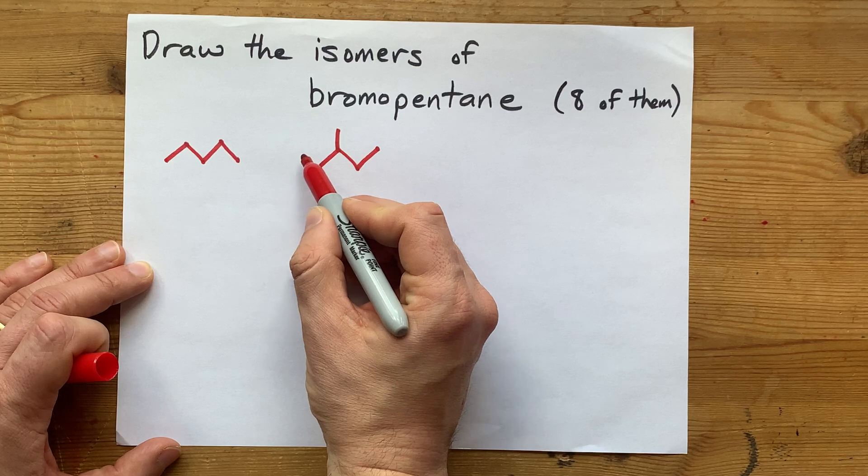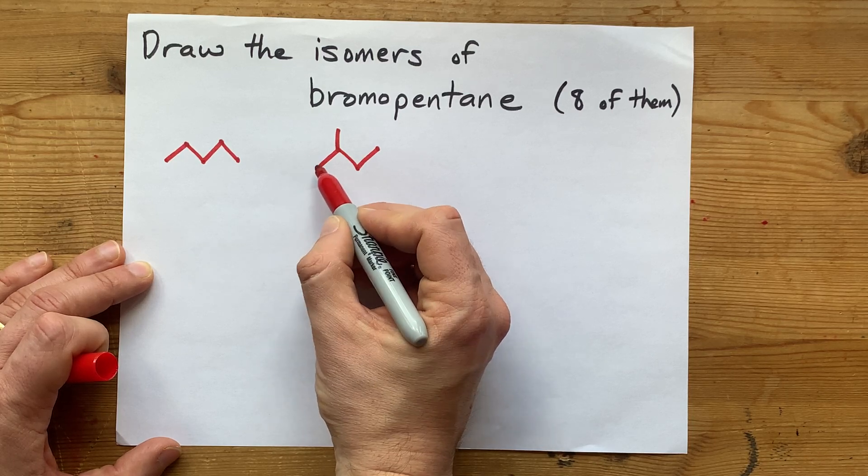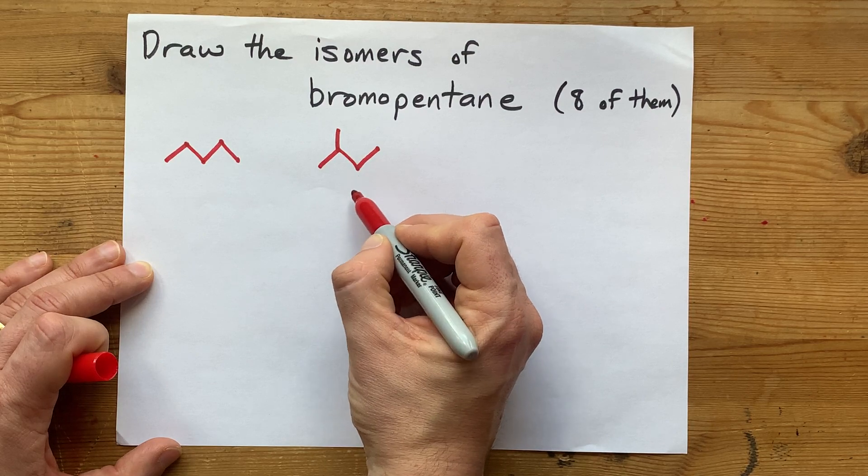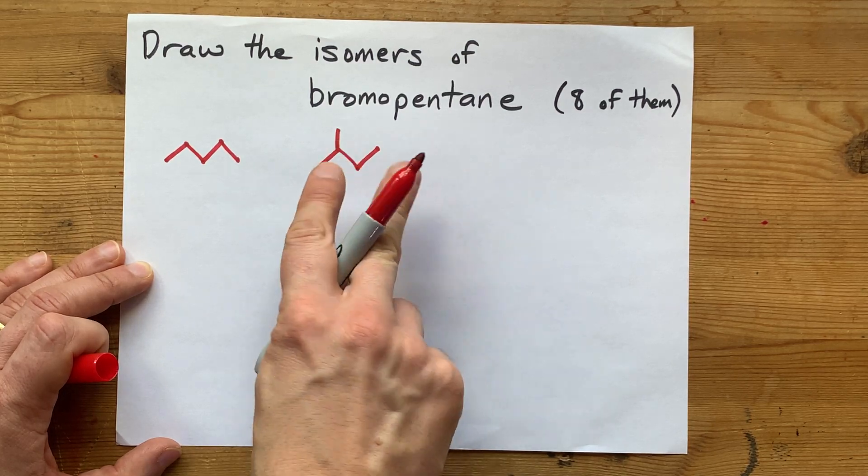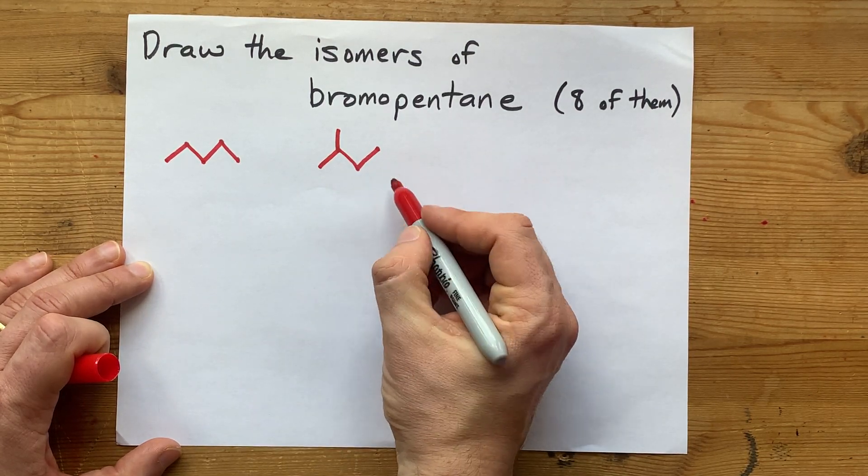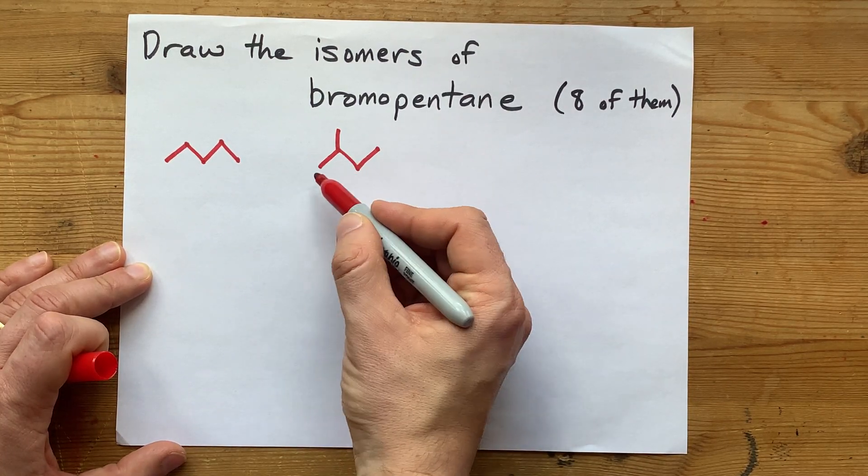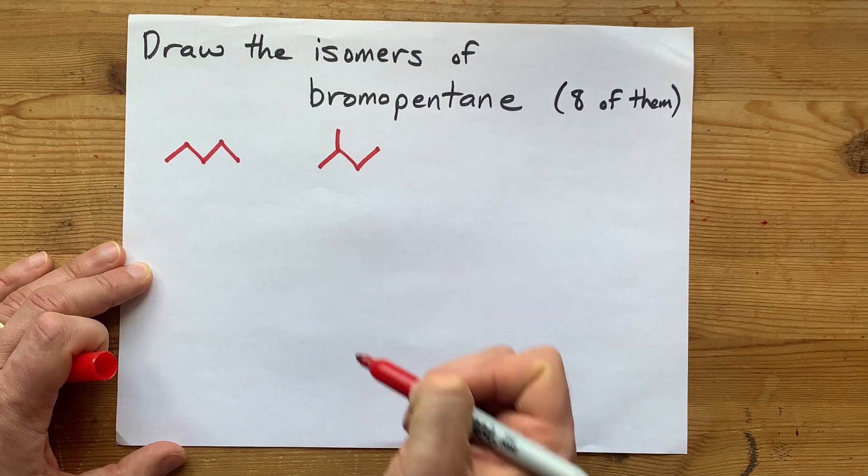Is there anywhere else we could put that branch that would give us a different isomer of the carbon backbone? No. If we put it here, we would have just done them all end to end, which is the same as this molecule. If we did it here, that's the same as putting it here, but flipped. And if we put it here, again, it's end to end, so it's just pentane again. So this is the only butane isomer that's five carbons long.